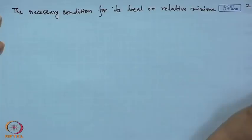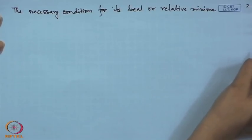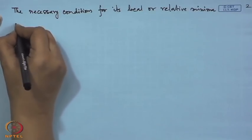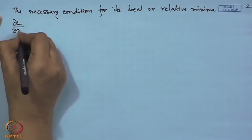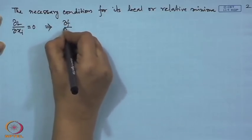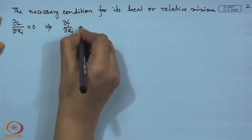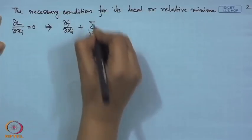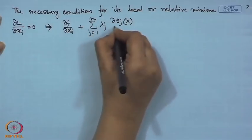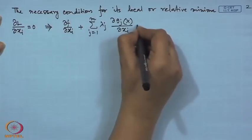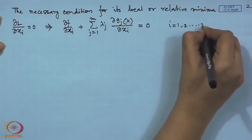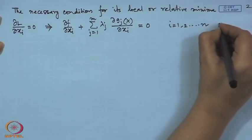Since we are minimizing the objective function, the condition ∂L/∂x_i = 0 reduces to: ∂f/∂x_i + Σ_{j=1}^{m} λ_j · ∂g_j/∂x_i = 0. We have n number of such equations, which we label as condition (2).